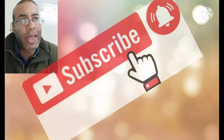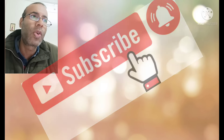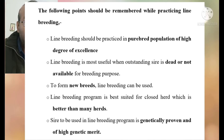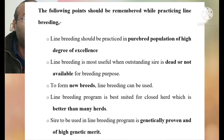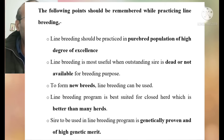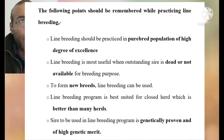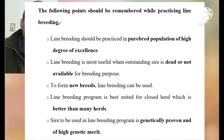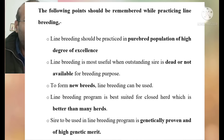There are a few points that must be considered while practicing line breeding. First, line breeding should be used for pure breed populations only, and the animal should be an excellent, outstanding individual. Line breeding could be used for animals that are dead or no longer available, and it can also be used for the synthesis of a new breed. It should be used when a closed herd is better than many adjacent herds, or when a bull is genetically proven or has very high genetic merit.